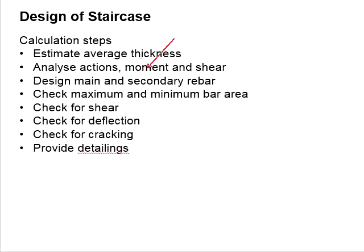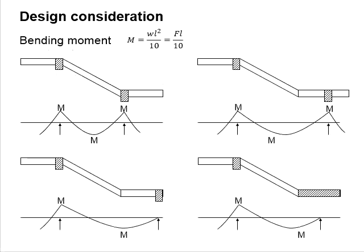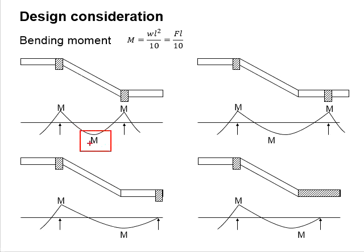Next, you analyze the actions — moment and shear. Depending on the existence of the adjacent slab, the staircase will be considered as a continuous span or simply ended span. The moment will be FL/10. You need to be careful with the locations of the moment: at mid-span there will be a positive moment, and at the support there will be a negative moment. The locations of the moment will determine the locations of the main reinforcement bar to be incorporated within the RC staircase.